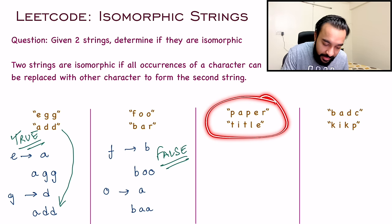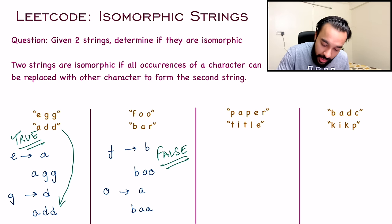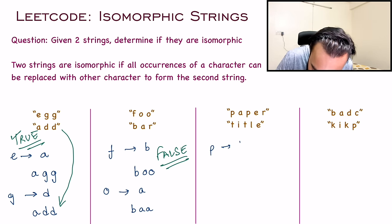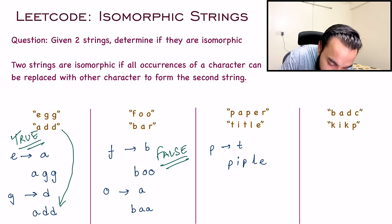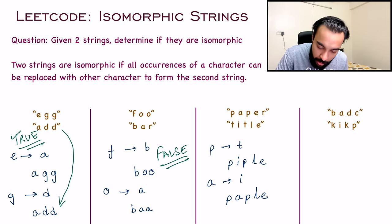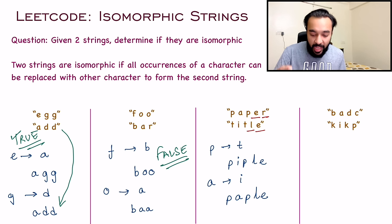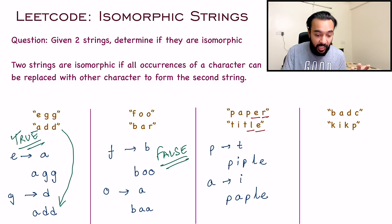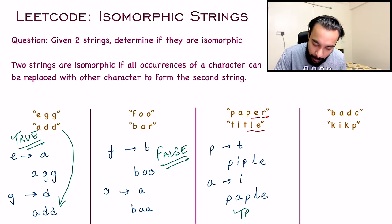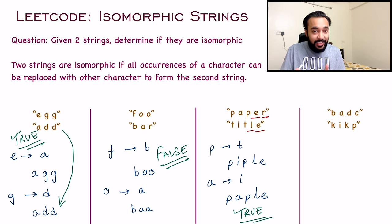In the third test case, you start with the first letter P and replace it with T. Then you replace A, then E with L, and R with E. Ultimately you get your string TITLE. So for this test case also, your answer will be true because these strings are isomorphic.